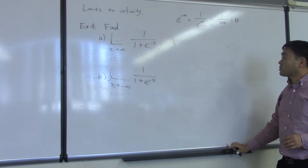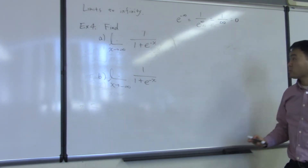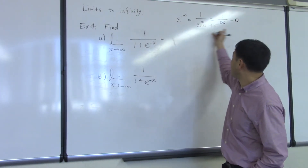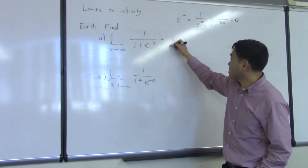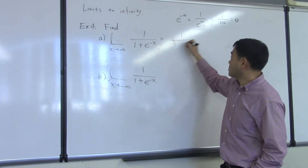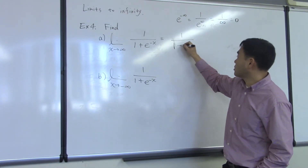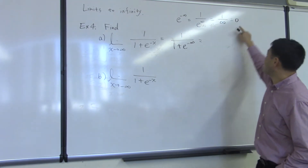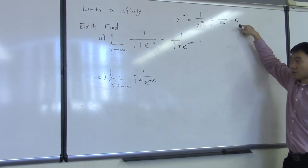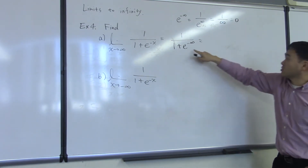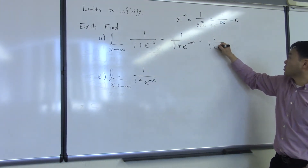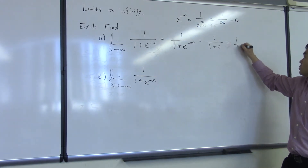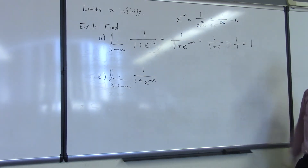And that's very important for our discussion. For this first limit, this is all you need — you're taking 1 plus e to the negative infinity, and since we already figured out that should be zero, we have 1 over 1 plus 0, which is 1 over 1, which is just 1.